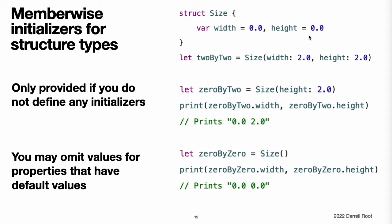The Size structure automatically receives an init(width:height:) memberwise initializer, which you can use to initialize a new Size instance. When you call a memberwise initializer, you can omit values for any properties that have default values. In this example, the Size structure has a default value for both its height and width properties. You can omit either property or both properties, and the initializer uses the default value for anything you omit.